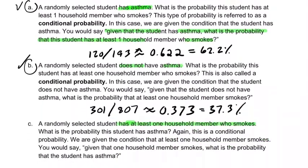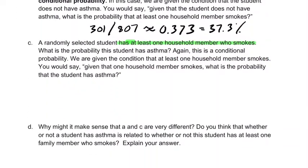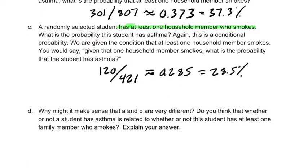So in that column, there are 421 people, and 120 of those 421 have asthma. So we get 120 out of 421. 120 divided by 421, 0.285, which is about 0.285, which is 28.5%.